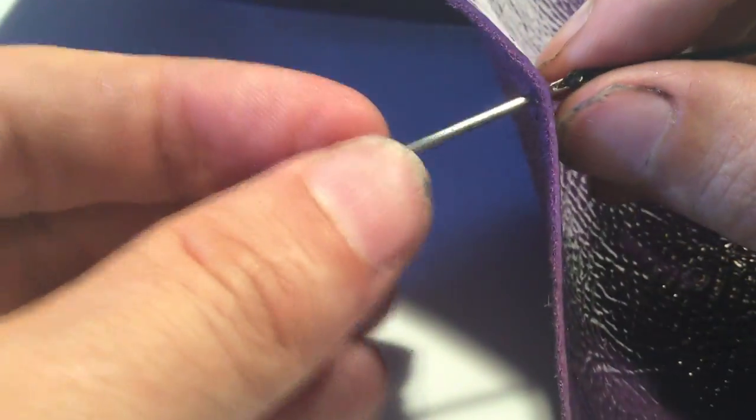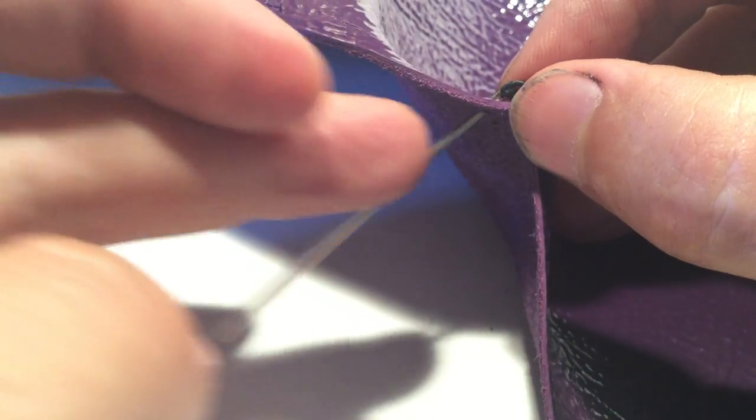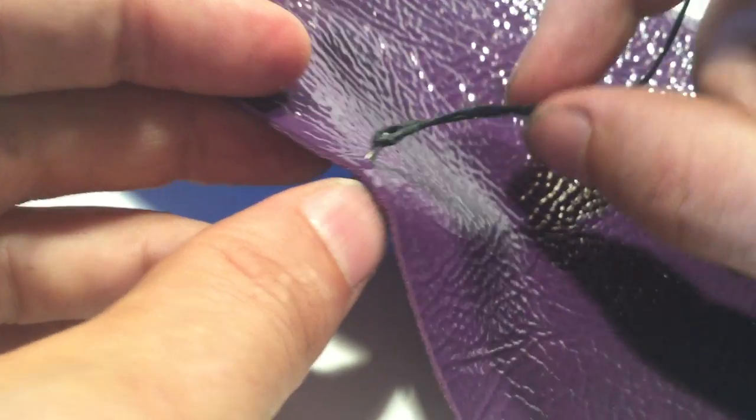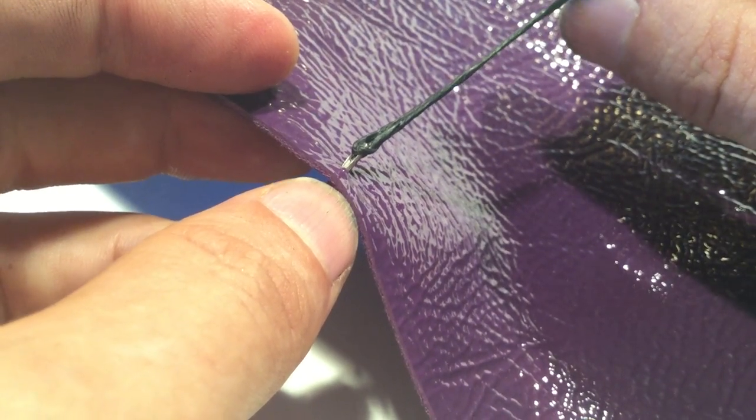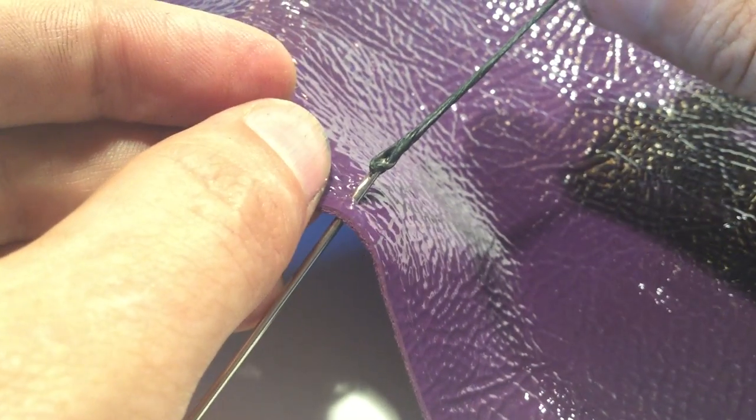And so when you're sewing with your two components together, there'll be a second needle tied to the other end of this thread that's coming through the opposite side of the exact same hole. And that's all you need to know in preparation for sewing leather with hand stitching.